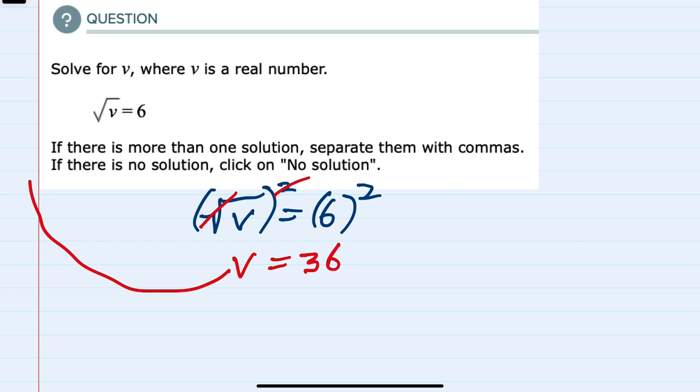And then just checking our solution here quickly, the square root of v is 6. If v were 36, then yes, the square root of 36 is 6. So we have found our solution.